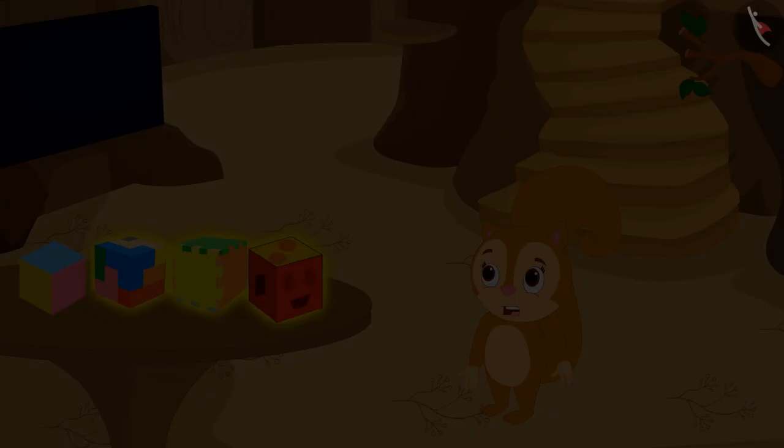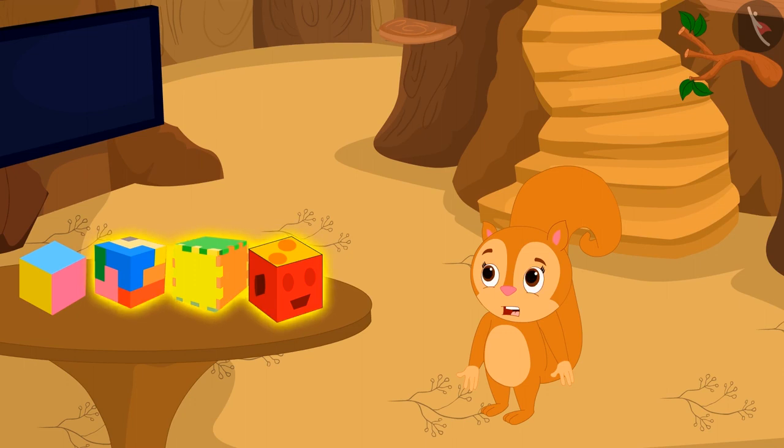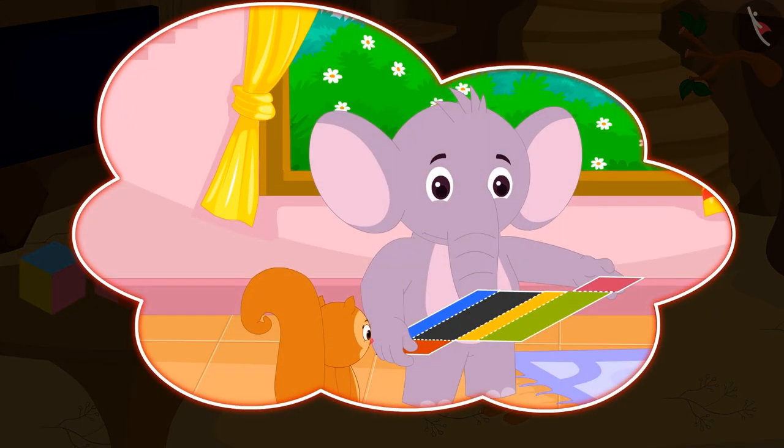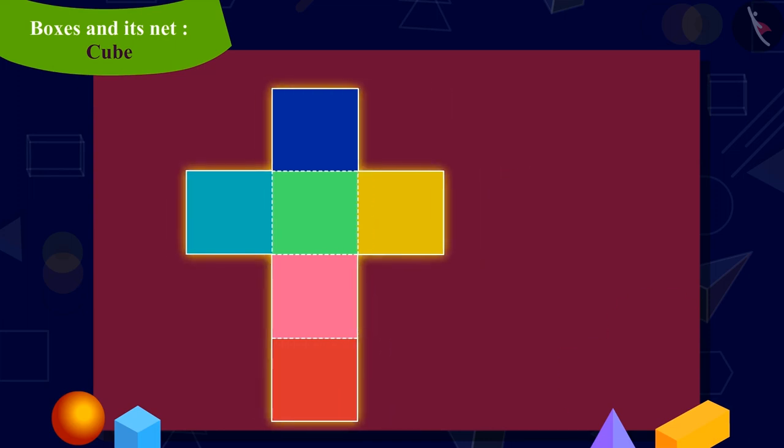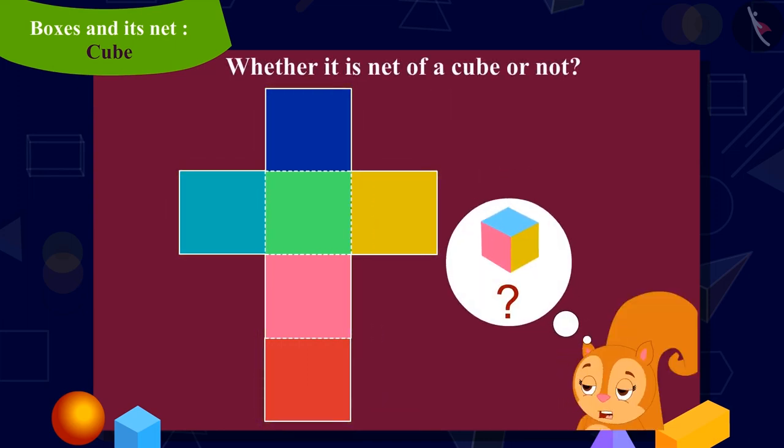Now Chanda has to make three more boxes for the toys. Chanda remembered that Appu told her that more than one net of every three-dimensional shape is possible. Chanda now made a shape like this. Can you tell whether this shape is also a net of a cube or not? You can pause the video to find out the answer.